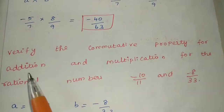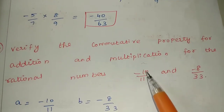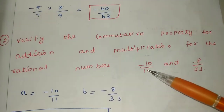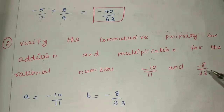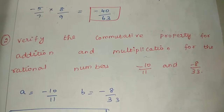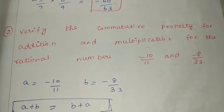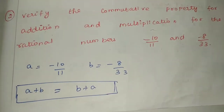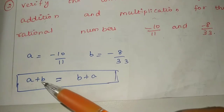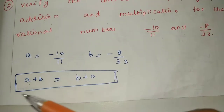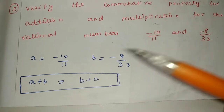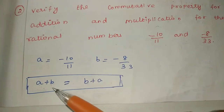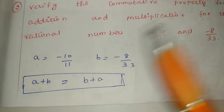Now Question 2: verify the commutative property for addition and multiplication for the rational numbers minus 10 by 11 and minus 8 by 33. For commutative property, A is minus 10 by 11 and B is minus 8 by 33. The formula is: A plus B is equal to B plus A. We need to prove LHS equals RHS.